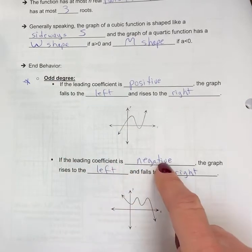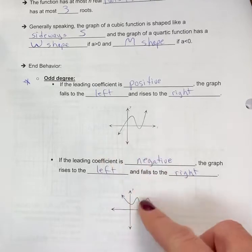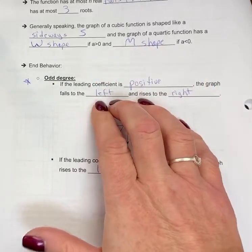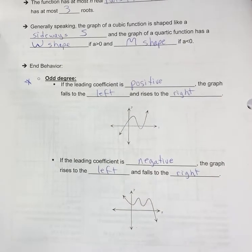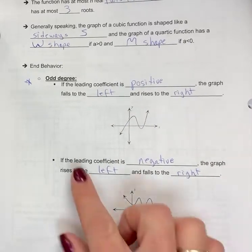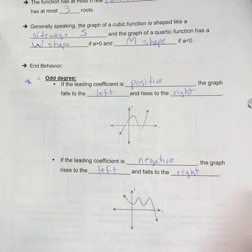If the leading coefficient is negative, because it's a reflection, the graph now rises to the left and falls to the right. I tend to just remember one and then remember for the negative it's the opposite situation.